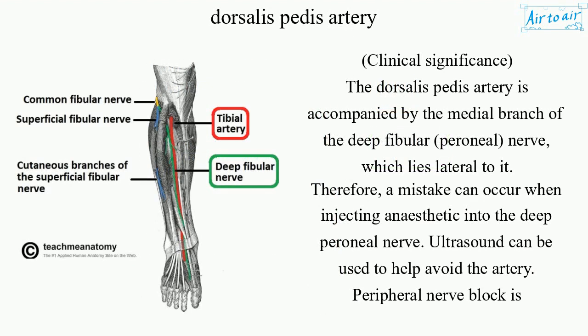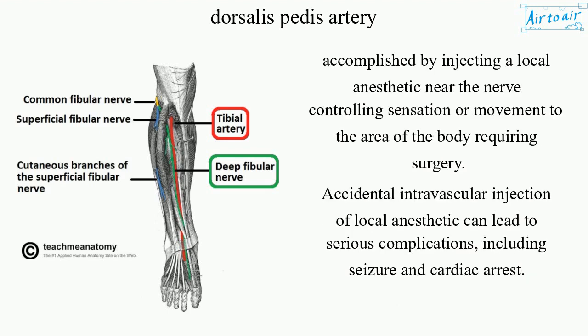Clinical Significance: The dorsalis pedis artery is accompanied by the medial branch of the deep fibular, or peroneal, nerve, which lies lateral to it. Therefore, a mistake can occur when injecting anesthetic into the deep peroneal nerve. Ultrasound can be used to help avoid the artery. Peripheral nerve block is accomplished by injecting a local anesthetic near the nerve controlling sensation or movement to the area of the body requiring surgery. Accidental intravascular injection of local anesthetic can lead to serious complications, including seizure and cardiac arrest.